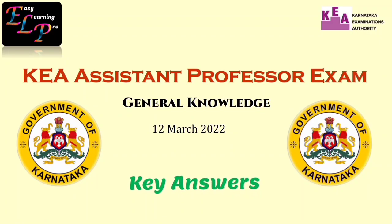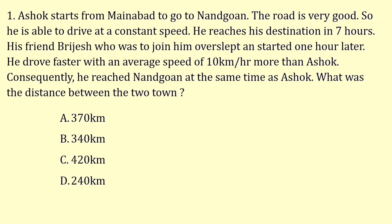Key Answers for Assistant Professor Exam General Knowledge Paper. Ashok starts from Mainabath to go to Nandagaon. The road is very good, so he is able to drive at a constant speed. He reaches his destination in 7 hours. His friend Brijes, who was to join him, overslept and started 1 hour later. He drove faster with an average speed of 10 km per hour more than Ashok and reached Nandagaon at the same time. What was the distance between the towns?